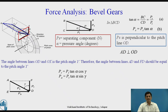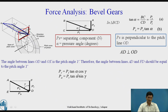We can now establish the relations. PS resolved gives its cosine component as the radial force PR, therefore PR equals PT tan alpha cos gamma. The sine component is equal to PA, the axial force, and hence PA equals PT tan alpha sin gamma.